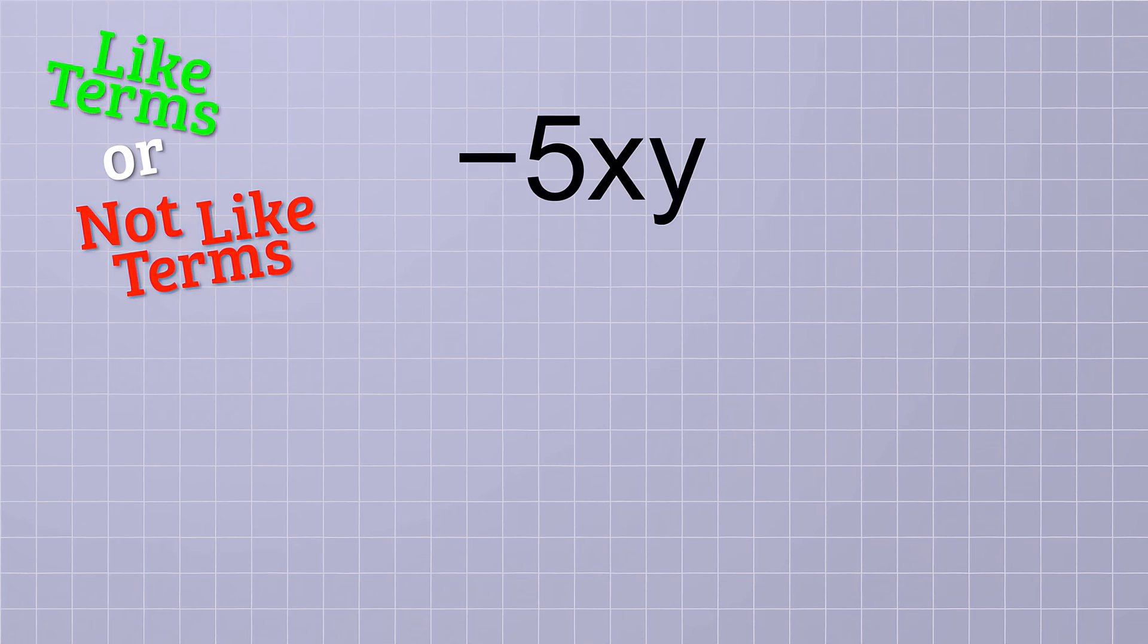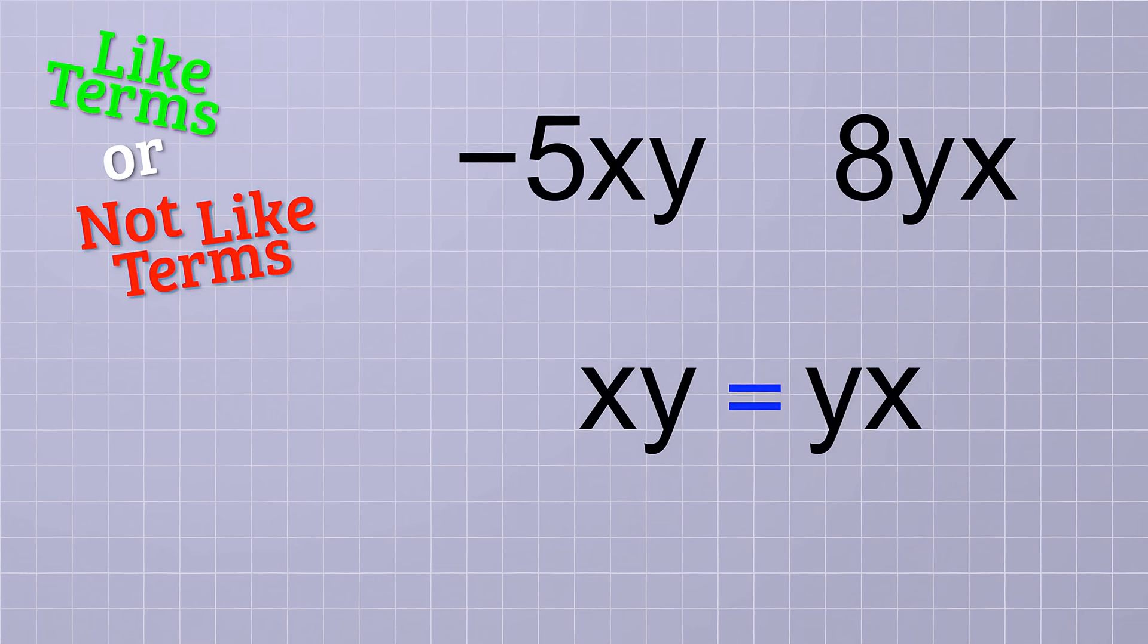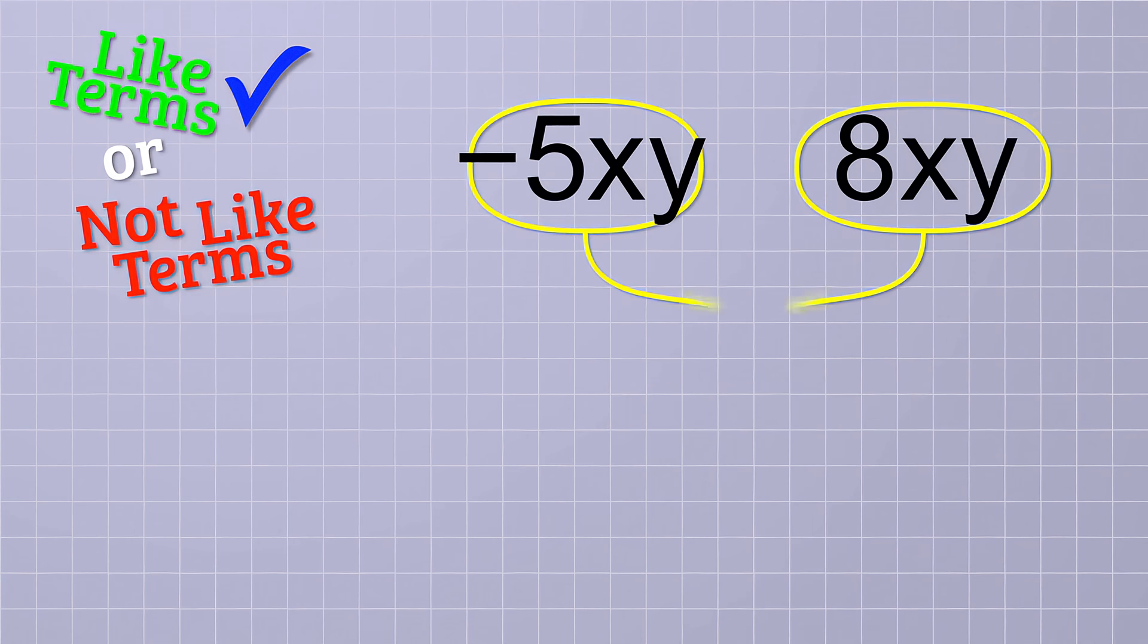Next, we have negative 5xy and 8yx. Are these like terms? Well, at first glance, you might think that the variable parts of these terms are different, because the x and the y are in a different order. But remember, multiplication has the commutative property, so the order doesn't matter. xy is the same as yx, so we can rewrite them so that they look the same too. There. Now we can add the number parts. Negative 5 plus 8 is 3. So we wind up with the single term 3xy.